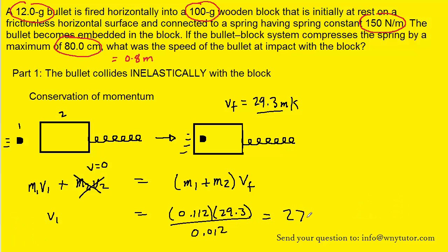And after plugging this into your calculator, you should get approximately 273 meters per second.